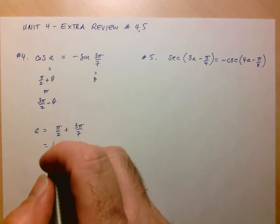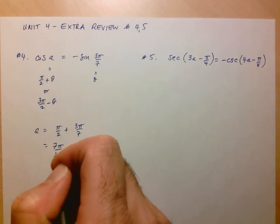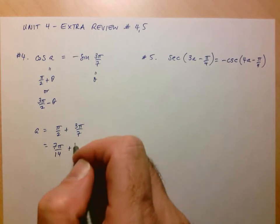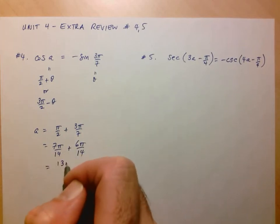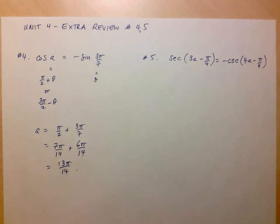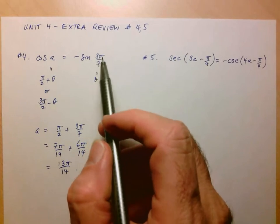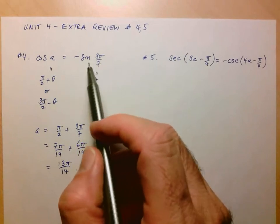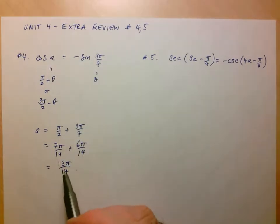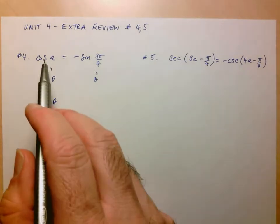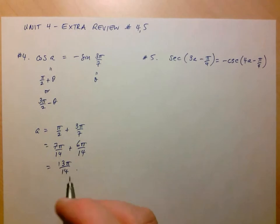I'm going to put everything over 14. So this is 7π over 14 plus 6π over 14. So 13π over 14 is one answer. Now if you think about it, 3π over 7 is in the first quadrant, so sine of that is going to be positive. And I look at A, the first one I found, well this is in the second quadrant, it's a little less than π. And so it makes sense that it's going to give me a negative cosine value.